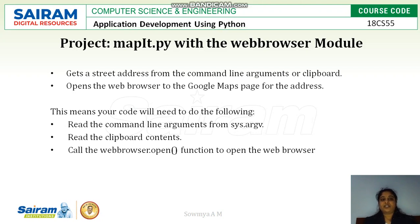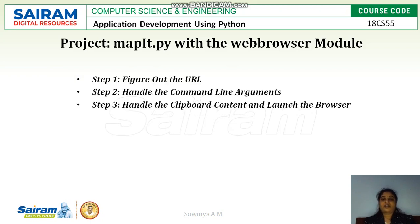Here is our project. The project is used for getting a Google Maps web page and specifying an address from the command prompt or clipboard, which is then opened through the webbrowser.open function to locate that address. The steps involved are: figure out the URL, handle the command line arguments, handle the clipboard content, and launch the browser.